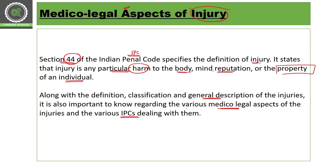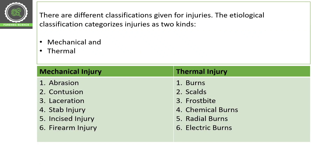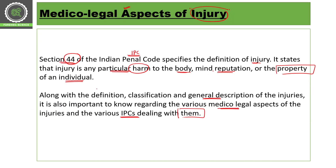Let's see a broader classification. We can classify injuries into two heads: mechanical and thermal. Mechanical injuries include abrasion, contusion, laceration, stab injury, incised injury, and firearm injury. Thermal injuries include burns, scars, phosphite, chemical burns, radial burns, and electric burns.